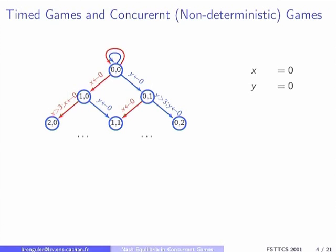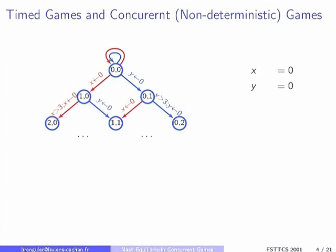The really challenging part is going from the game to the solution, and that's what I'm going to talk about. Our model: in the beginning we were interested in timed games, which are nice for modeling real-time systems. In this model you have states, you have clocks. You can reset the clocks and compare them to some constants — for instance, y greater than 3. So it's not a timed automaton; it's a timed game. You see that transitions are either red or blue, controlled by players. The red transitions are controlled by the red player and the blue transitions by the blue player, and you can have as many players as you want.